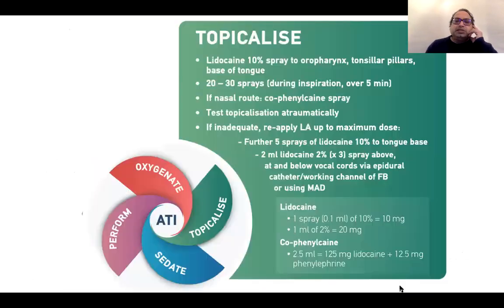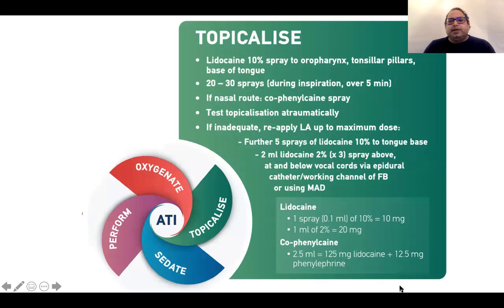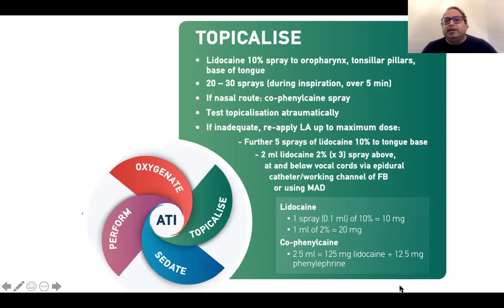Regarding topicalization, the DAS guidelines recommend using 10% spray — 10 mg per spray — on the tonsillar pillars and base of the tongue, around 20–30 sprays during inspiration over five minutes. For the nose, use co-phenylcaine, which is 5% lidocaine with phenylephrine for vasoconstriction. For spray-as-you-go, use 5 mL syringes filled with 2% lidocaine — 2 mLs of lidocaine and 3 mLs of air — delivered through an epidural catheter or a MAD device.